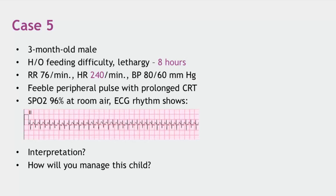To summarize how to differentiate SVT from sinus tachycardia: in SVT, P waves are either absent or abnormal, the RR interval is fixed, and the tachycardia is of very high degree — typically greater than 220 beats per minute in infants and greater than 180 in older children.